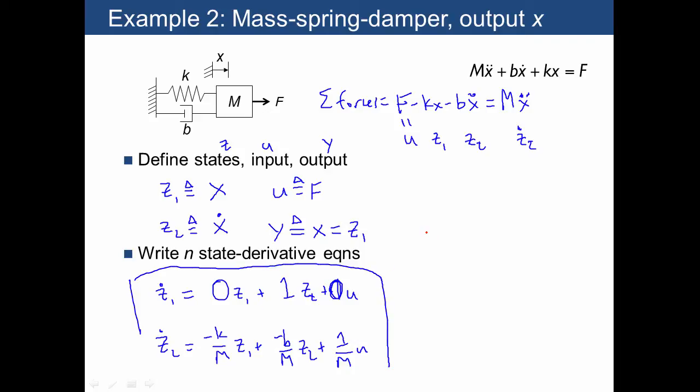We can, of course, also write this in the matrix form. The matrix form, in general, is that we have some vector of z's where the state derivative is A times z plus B times u. And what I didn't show you before, but we'll show you now, is that the output is also going to be defined in terms of the states as C times z plus D times u.